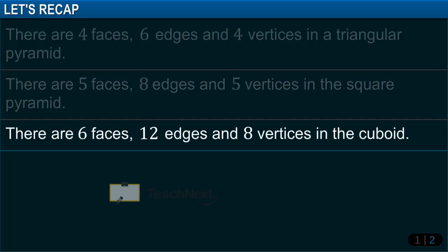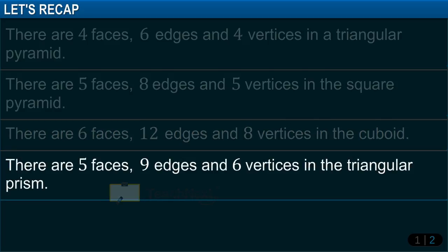There are five faces, nine edges, and six vertices in the triangular prism.